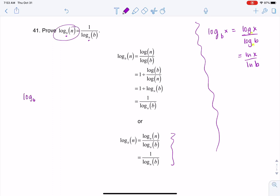I would see log base B of N and I would say, okay, I want to get from base B to base N, so let me change the base. This is going to be log of the argument in ratio to log of the base.